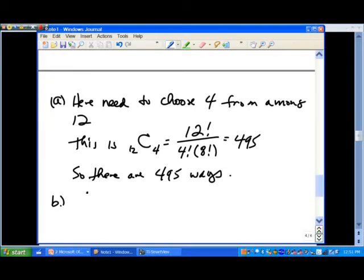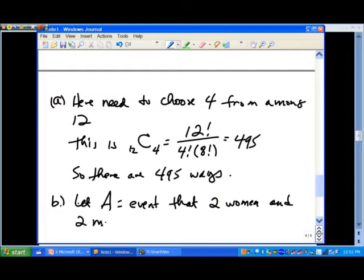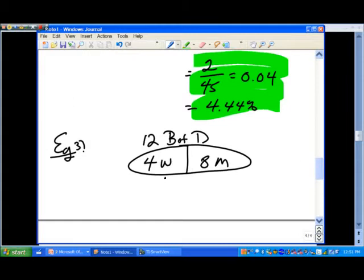In part B, let's let, excuse me, we called it A in the example. We'll let A represent the event that two women and two men are picked. So in other words, out of this group here, we want to draw two women and then two men.